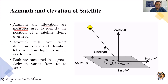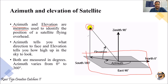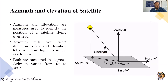Azimuth and elevation are the measures used to identify the position of a satellite flying overhead. Suppose this is a satellite and this is a ground station. Whenever you want to communicate with a satellite using a ground station, you need to use a large antenna. This antenna should be pointed towards the satellite, and azimuth and elevation angles depend on how the antenna is positioned.